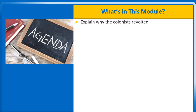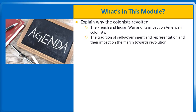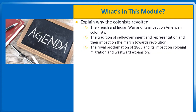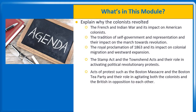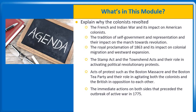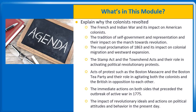After completing this module, you'll be able to explain why the colonists revolted, and develop an academic understanding of the following concepts: the French and Indian War and its impact on American colonists; the tradition of self-government and representation; the Royal Proclamation of 1763; the Stamp Act and the Townsend Acts; acts of protest such as the Boston Massacre and the Boston Tea Party; immediate actions preceding the outbreak of war in 1775; and the impact of revolutionary ideals on political attitudes today.